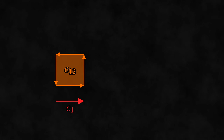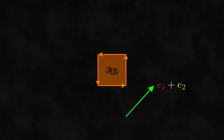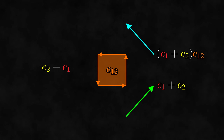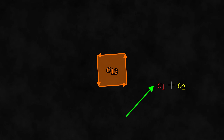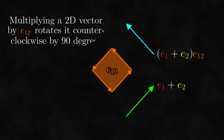Notice that when we multiplied e1 by e12, the result was e1 rotated by 90 degrees counterclockwise. When we multiplied e2 by e12, the result was e2 rotated by 90 degrees counterclockwise. So it seems that multiplying a vector by e12 rotates it by 90 degrees counterclockwise. The orientation of e12 is counterclockwise as well, which is a nice way to remember what multiplying by e12 does. What if we are multiplying a vector that is not some scalar multiple of e1 or e2 by e12? For example, what is (e1 + e2) times e12? We can just work through the algebra again — the result is still the original vector rotated by 90 degrees. In general, multiplying any two-dimensional vector by e12 will rotate it by 90 degrees counterclockwise.